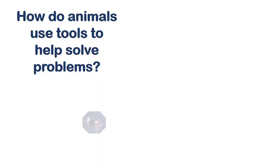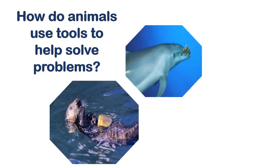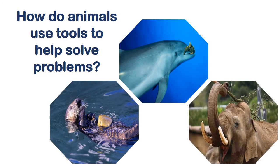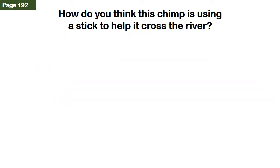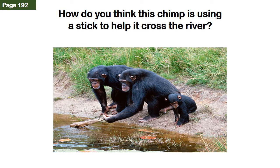So how do animals use tools to help solve problems? Animals find things in nature to use as tools to help them solve problems. On page 192, you can see a photo of a chimpanzee holding a stick. Answer the following in your book and attach it on your schoolwork tab.